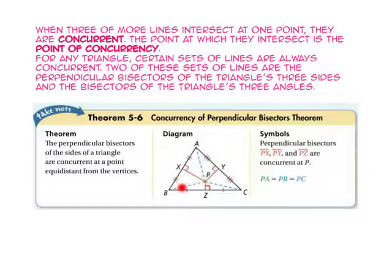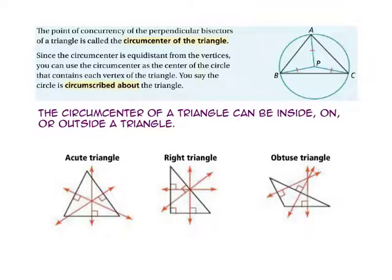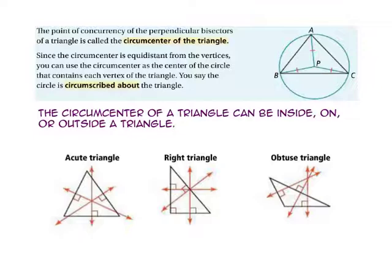Point P is the same distance away from point B as point P is from point A, as point P is from point C. The point of concurrency of the perpendicular bisectors of a triangle is called the circumcenter of the triangle. So point P is the circumcenter of triangle ABC. Since the circumcenter is equidistant from the vertices, you can use the circumcenter as the center of the circle that contains each vertex of the triangle. You can say that the circle is circumscribed about the triangle.